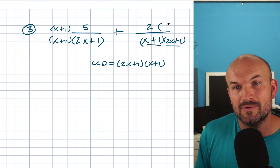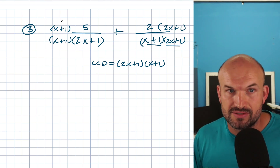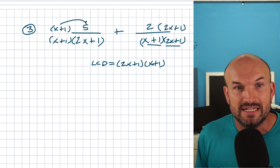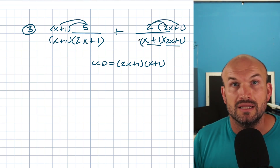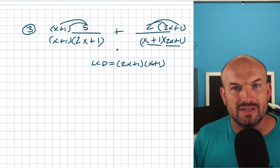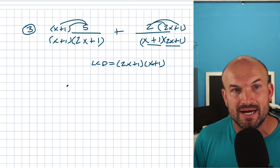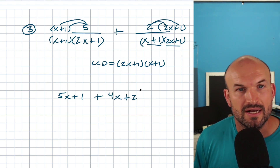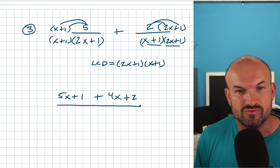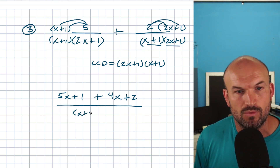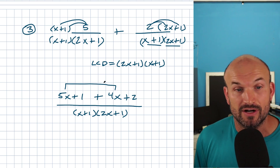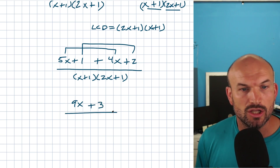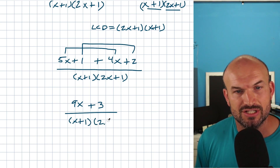Now I have numbers outside parentheses, so I apply the distributive property — multiplying that number times both terms inside. When I multiply the numerator on the left-hand side, I get 5X plus one. On the right-hand side that gives me 4X plus two. Now I have my common denominator, so I rewrite everything over X plus one times 2X plus one. Combining variables and numbers gives a final answer of 9X plus three, all over X plus one times 2X plus one.